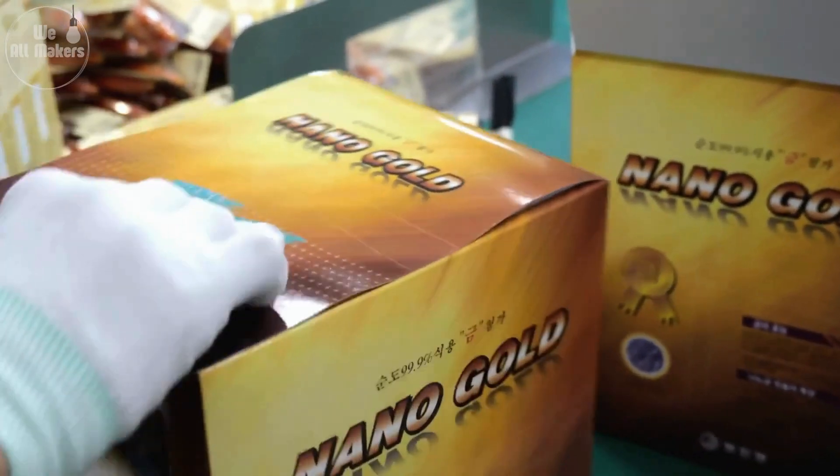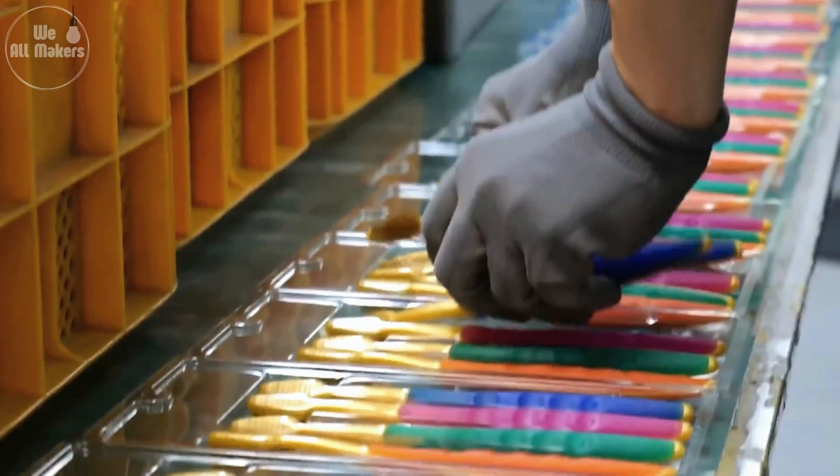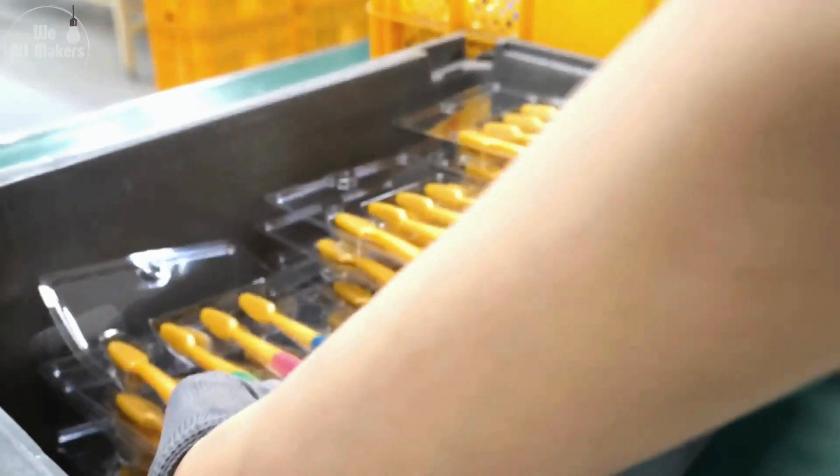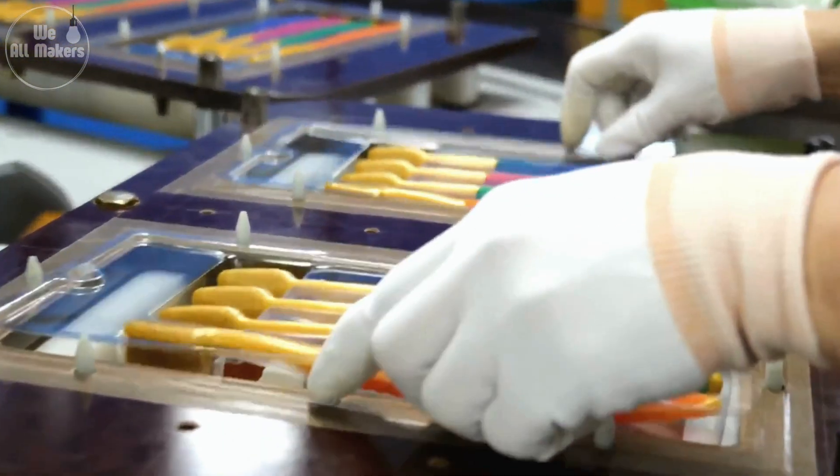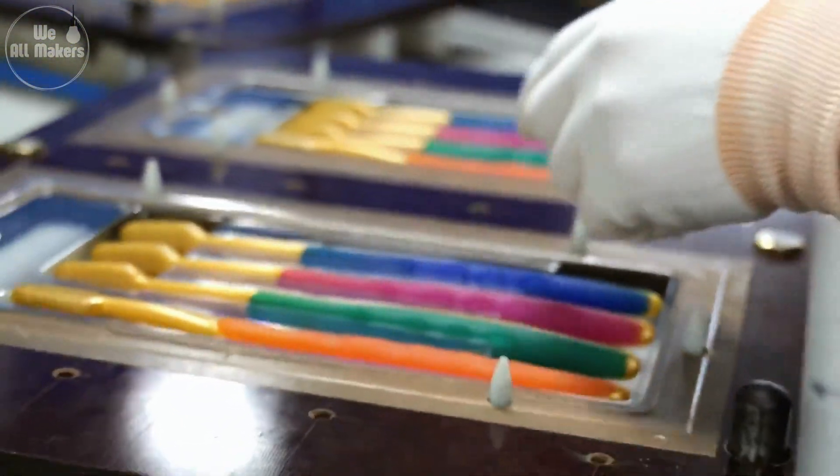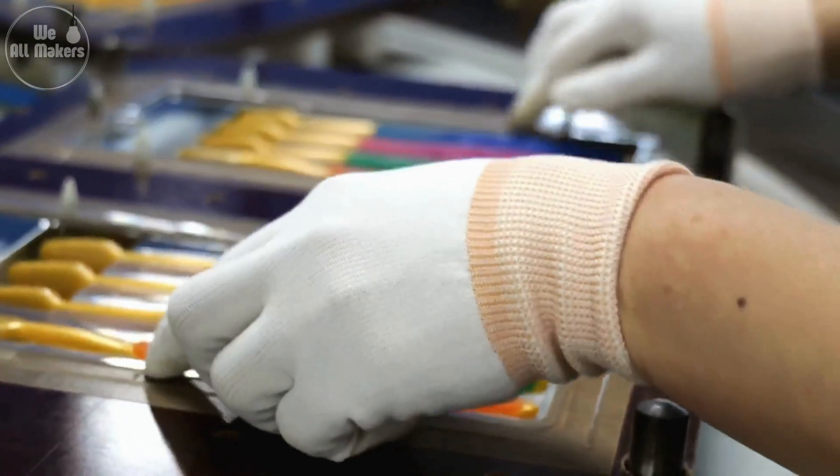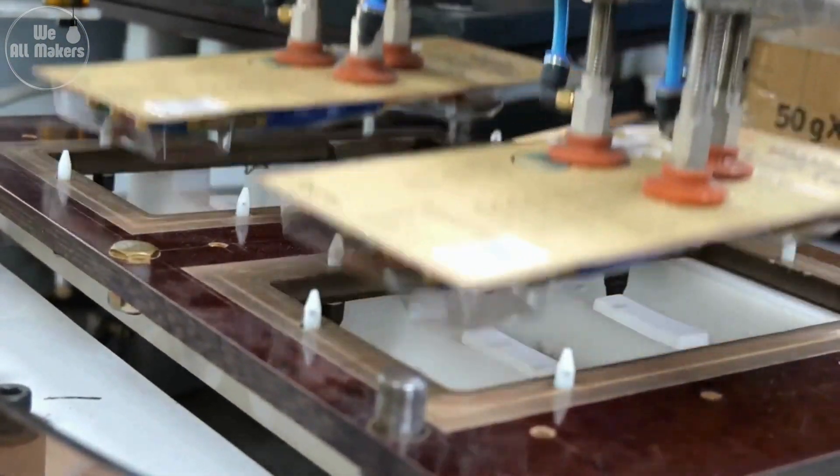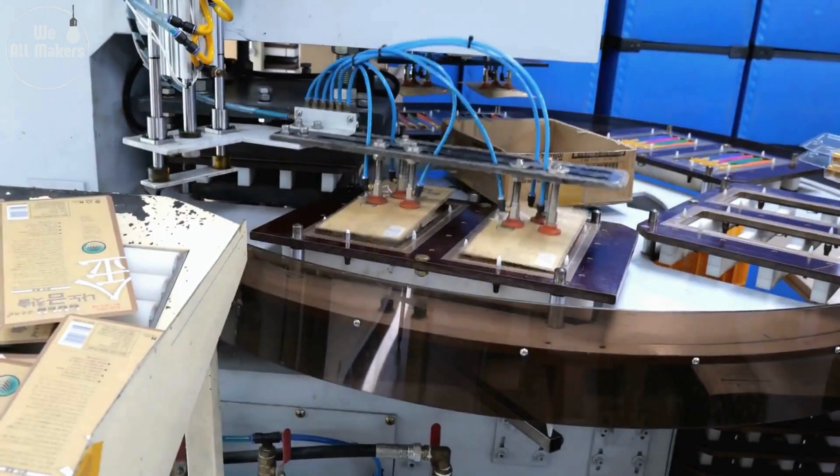When it comes to packaging and shipping toothbrushes, it's not just about protecting the product. It's also about making a positive impact on the environment. Many manufacturers are now shifting towards using eco-friendly materials for their packaging, such as recyclable cardboard or biodegradable plastics.